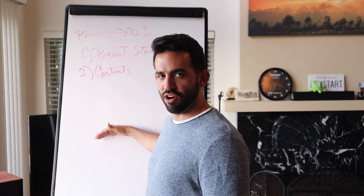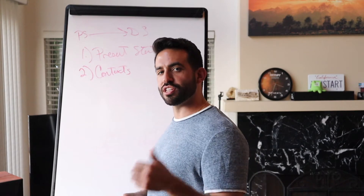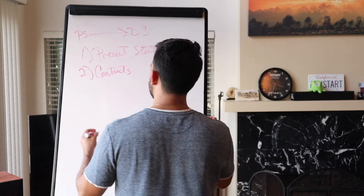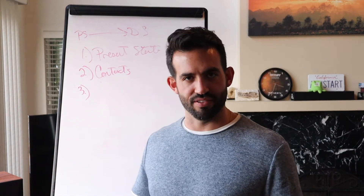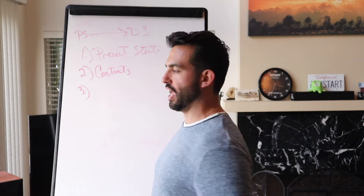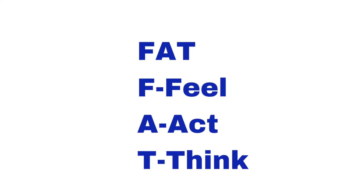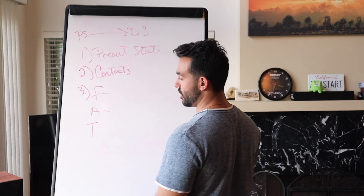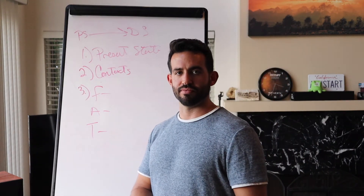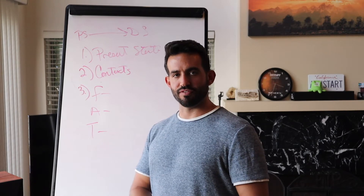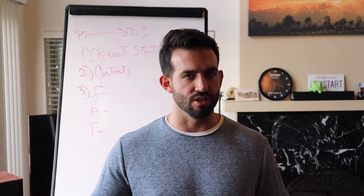For each context, you're going to want to find the trigger — the trigger for you to think, feel, and behave in that way. I want you to remember this acronym: FAT. F-A-T. How do I feel in that situation? How do I act in that situation? And how do I think in that situation that allows me to feel and act that way in the first place? For each context, write down your FAT — your feel, your action, and your thinking.